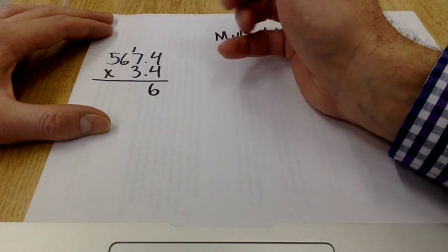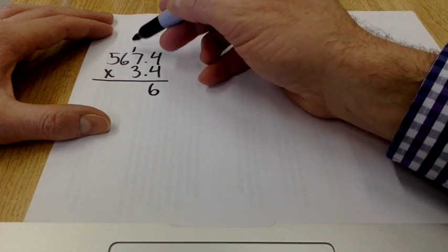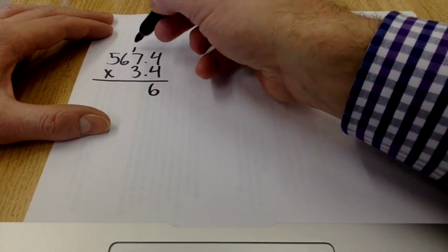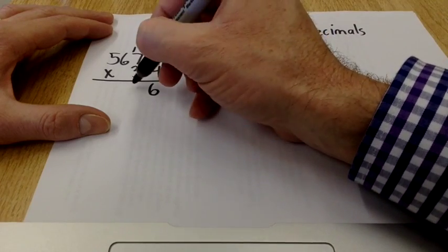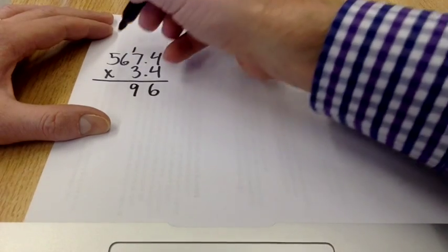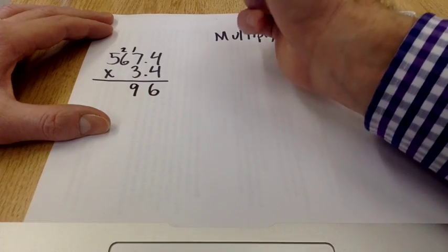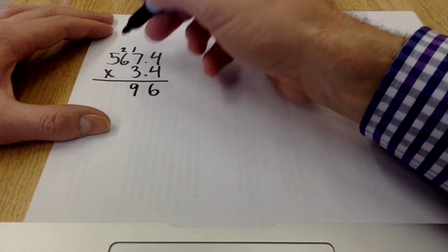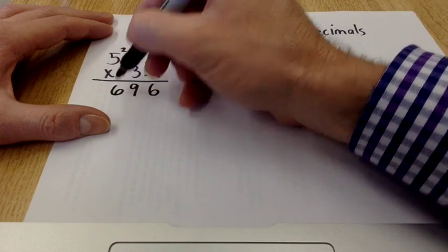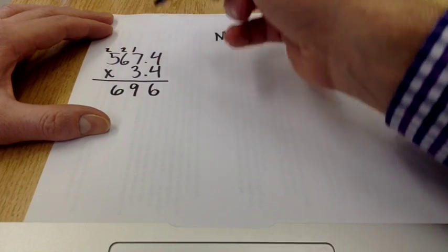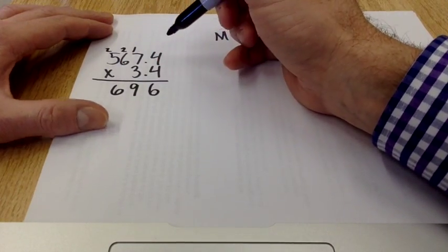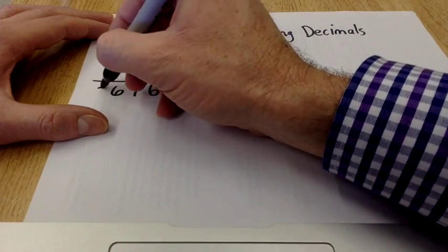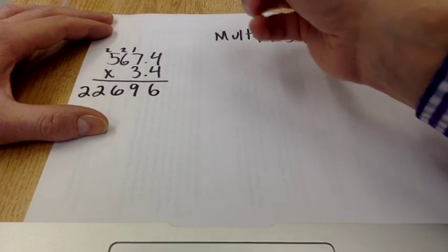Next is 4 times 7, gives me 28. I need to add that extra 1 in there, so 28 plus 1 is 29. Put down the 9, carry the 2. 4 times 6 is 24. Add my 2, becomes 26. 4 times 5 is 20. Add my 2, gives me 22.